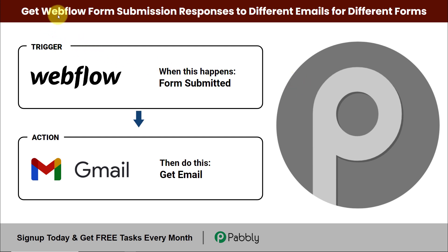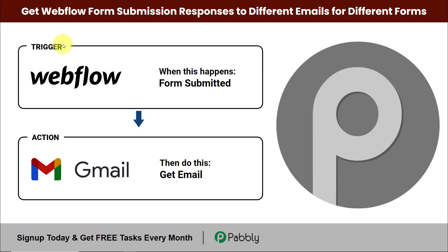In this video we are going to see how to get Webflow form submission responses to different emails for different forms. I have two forms in my Webflow: an inquiry form and a request form. Every time a request form is filled, the response should be received by one email address, and when an inquiry form is filled, a different email address should receive the response. To do this, I'm going to integrate Webflow and Gmail using Pabbly Connect, where Webflow is the trigger and Gmail is the action.